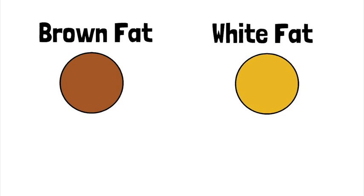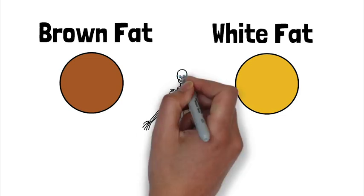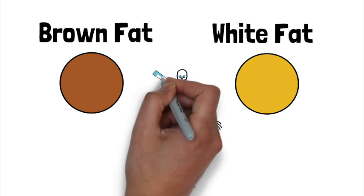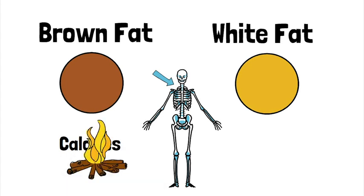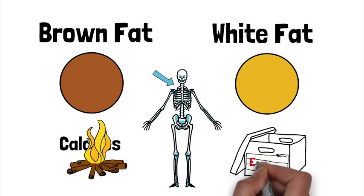Brown fat tissues are less common but can be found primarily in your neck and shoulder. They burn excess calories to provide energy for the body. On the other hand, white fat cells are responsible for storing energy and they make up most of the surface fats throughout our bodies.